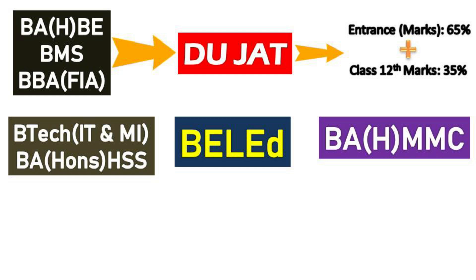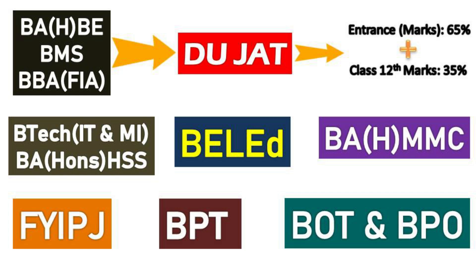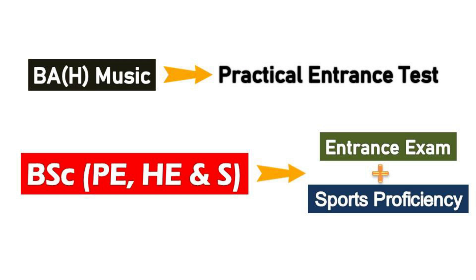Then you will find two courses in the Cluster Innovation Centre: BTech in Information Technology and Mathematical Innovation, and BA Honours in Humanities and Social Sciences. In education, BA Honours in Multimedia and Communication. There is a five-year integrative program in journalism with BGMC and MGMC courses. Then you have BPT, BOT, and PPO. In music, BA with a practical entrance test. Then BSc in Physical Education, Health Education, and Sports — entrance examination is 50% weightage and sports proficiency is 50% weightage.